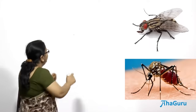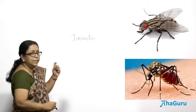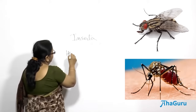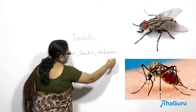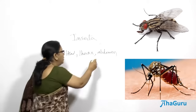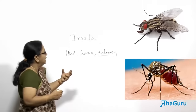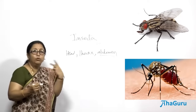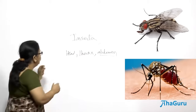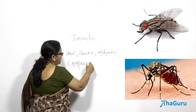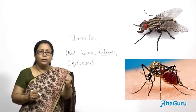Insecta is the largest class under arthropoda. The insect body is divided into three parts: head, thorax, and abdomen. There are no appendages in the abdomen — only the head and thorax have appendages. They have three pairs of walking legs, and one or two pairs of wings arising from the thorax which help them fly. Insects are known to have compound eyes which help them detect even the smallest movement.